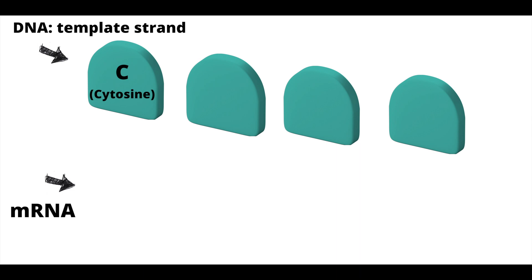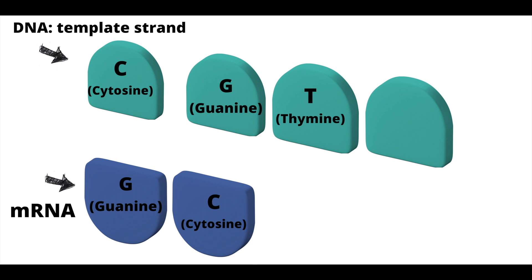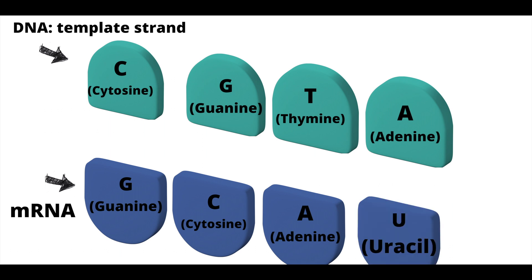Let's say we have cytosine. Polymerase reads this base and finds what complements it to make mRNA. Guanine complements cytosine, so it makes guanine. Next is guanine—cytosine pairs with it. Then thymine—adenine pairs with it. Lastly, adenine. What RNA base complements adenine? It's uracil, not thymine. After mRNA has several nitrogenous bases, they bond together. This sums up transcription.